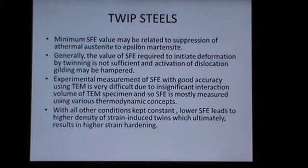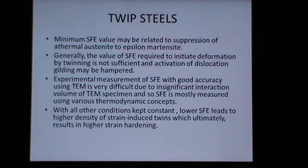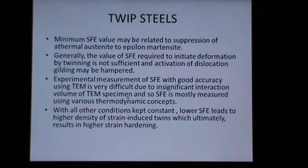The minimum SFE value may be related to the suppression of athermal austenite to epsilon martensite transformation. Generally, the value of SFE required to initiate deformation by twinning is not sufficient, and activation of dislocation gliding may be hampered. Experimental measurement of SFE with good accuracy using TEM is very difficult due to the insignificant interaction volume of TEM specimens, and so SFE is mostly measured using various thermodynamic concepts.